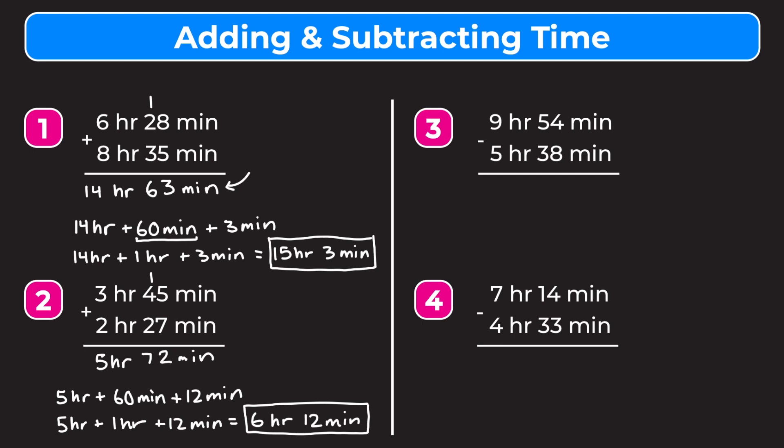In example three we have 9 hours 54 minutes minus 5 hours 38 minutes. We start with the minutes, but we can't subtract 4 minus 8 since 4 is smaller than 8, so we borrow from the tens digit. We change the 5 to a 4 and the 4 becomes 14. Then 14 minus 8 is 6, and 4 minus 3 is 1, giving us 16 minutes.